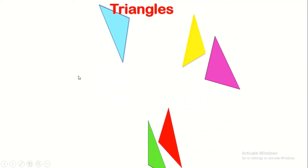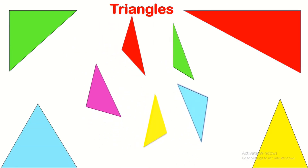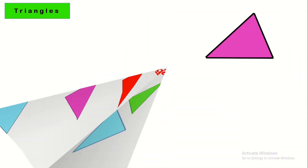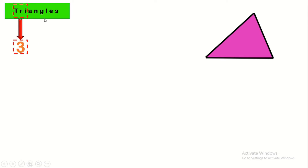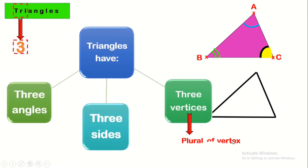Welcome to our channel, Learning Math. In this video we're going to learn about triangles: what are the properties of triangles, what are the natures of triangles, and how to construct them. Triangles — tri means three — three angles. As you see, it has three angles, three sides, and three vertices, which are the intersections of these sides. Each vertex is a point with a capital letter name. The name of this triangle is taken from the names of its vertices, so we name it triangle ABC.